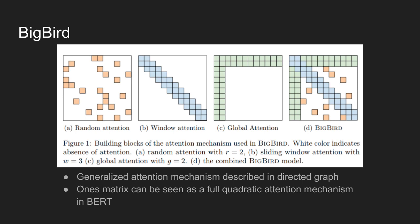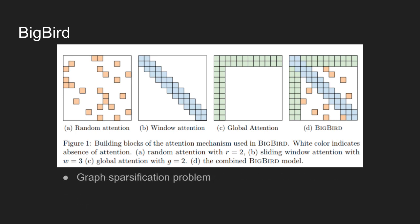If the query element in row i attends to the key element in column j, element at ij takes a value of 1. If adjacency matrix is 1's matrix, it can be seen as a full quadratic attention mechanism in BERT, where all tokens attend to all other input tokens. Given the adjacency matrix, the problem of reducing the quadratic complexity of self-attention is now seen as a graph sparsification problem.